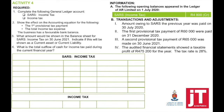Looking at Activity 4, we have to complete the SARS income tax and the income tax account. The following opening balances appeared in the ledger of AR Limited on the 1st of July 2020. SARS income tax shows a credit balance of $4,800 — this means it is a liability; we owe SARS. The amount owing to SARS from the previous year was paid on the 5th of July 2020, so bank is credited and SARS income tax is debited with $4,800.